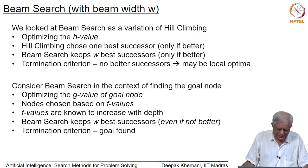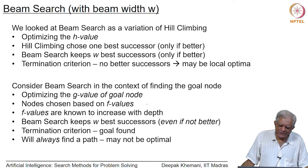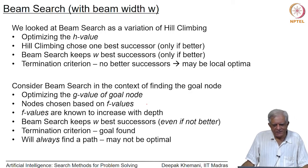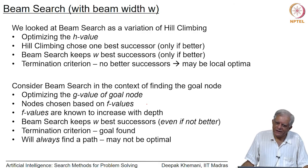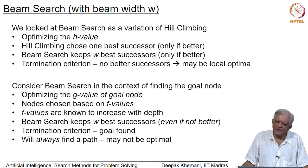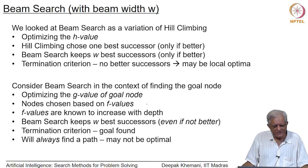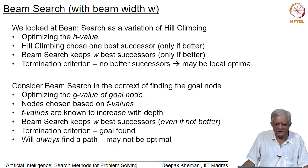In this context, beam search keeps the w best successors even if they are not better — in fact we expect them not to be better. The termination criterion is different: we terminate only when the goal is found. We can argue, similar to the A* argument for infinite graphs, that the algorithm will terminate with a path to the goal if one exists, because every edge cost is greater than some positive epsilon. Beam search will still find a path to the goal, but it may not be the optimal path.